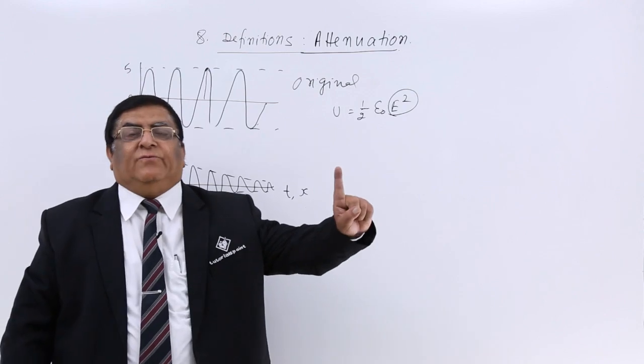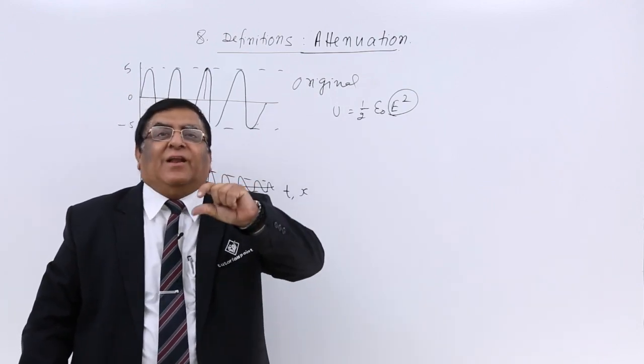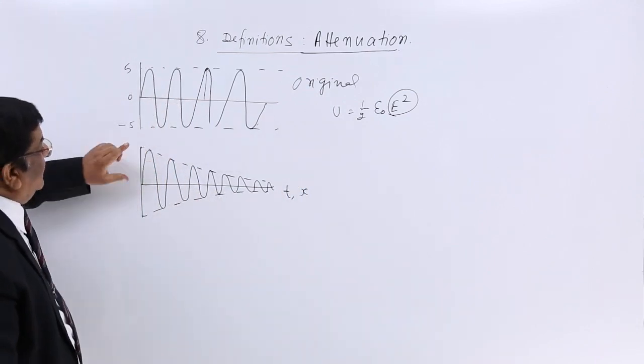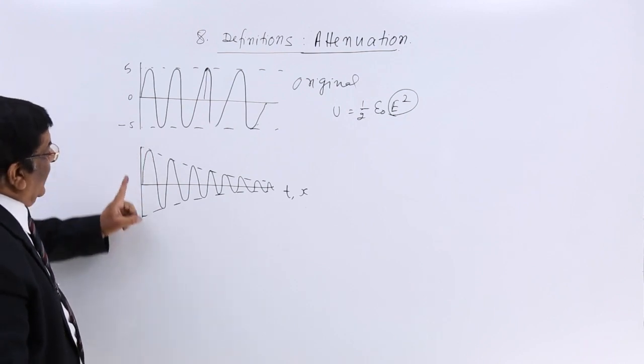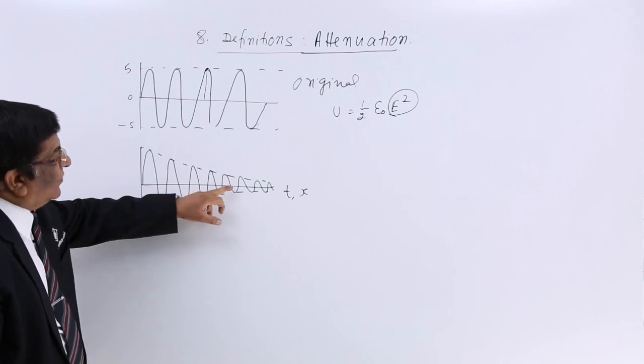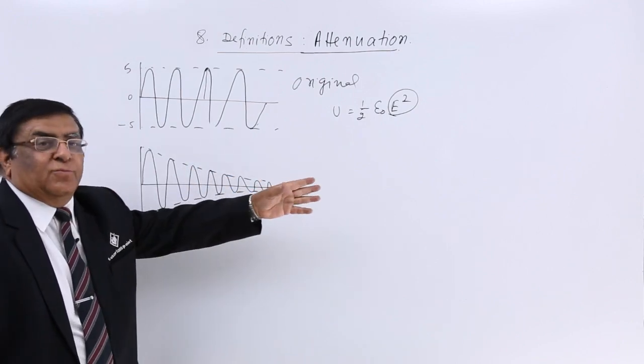So the more you move away from the tower, the signal becomes weaker and weaker. Here, this is the strength very close to the mobile tower. Then if your house is here, you get this much strength. If your house is here, you get this much strength. If your house is here, almost no strength.